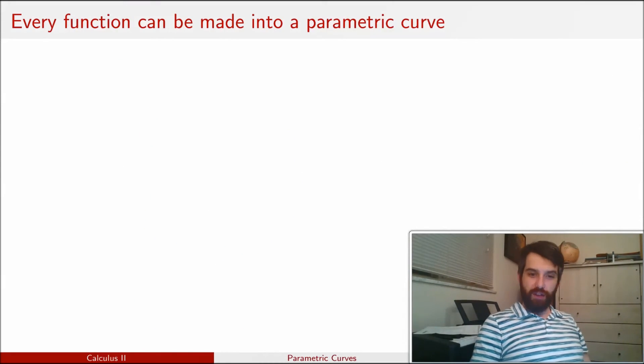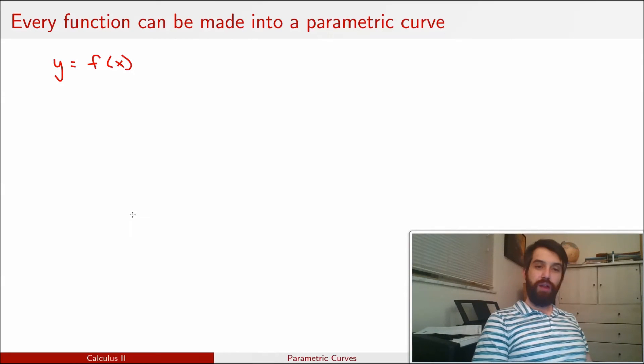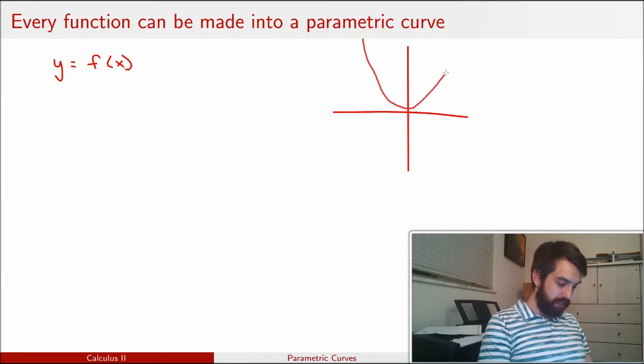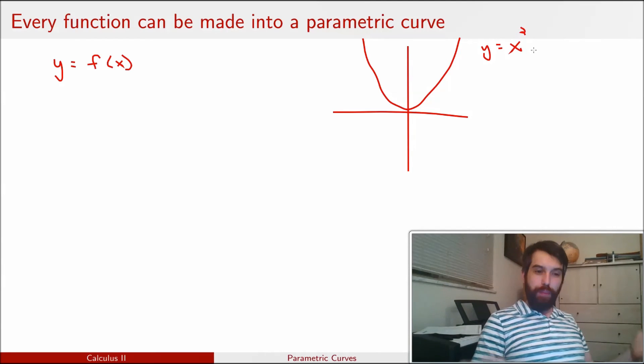One last somewhat technical point. Suppose that I have some function y and it's given to be f of x. So what I normally think of is that maybe this is a graph like say x squared and that what we have is a curve, but the curve is a graph of a function and it passes the vertical line test. Now, I want to think about this as being a parametric curve.